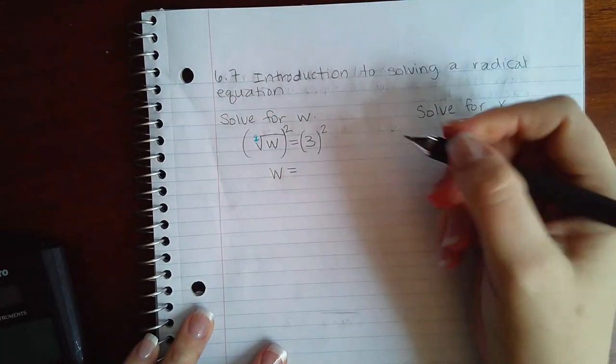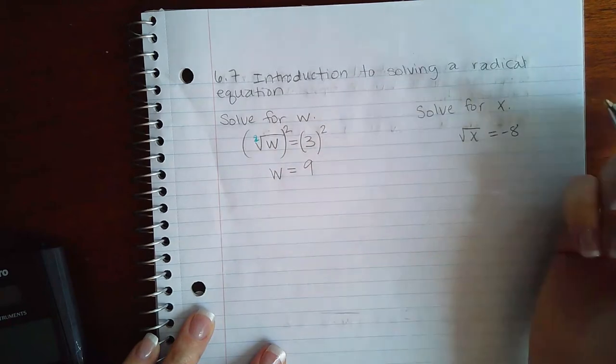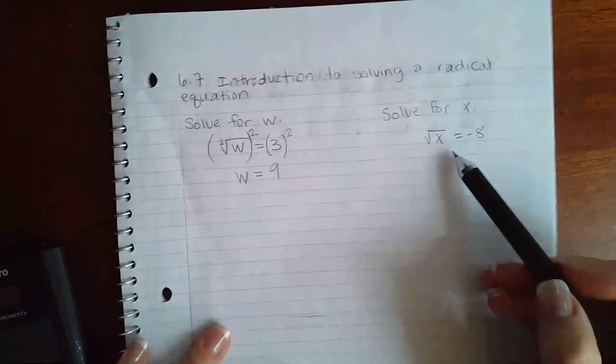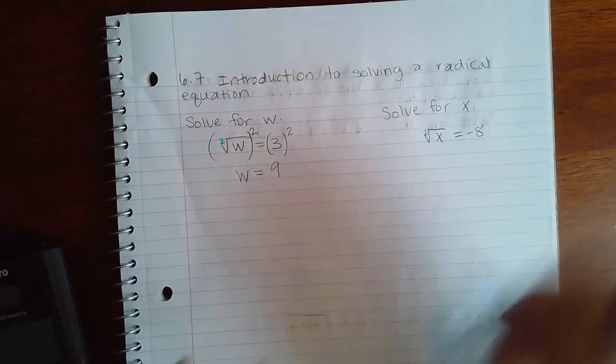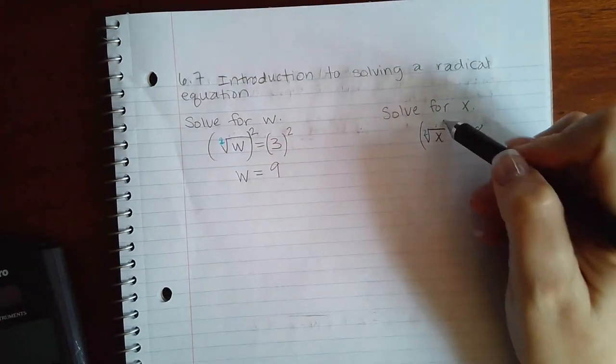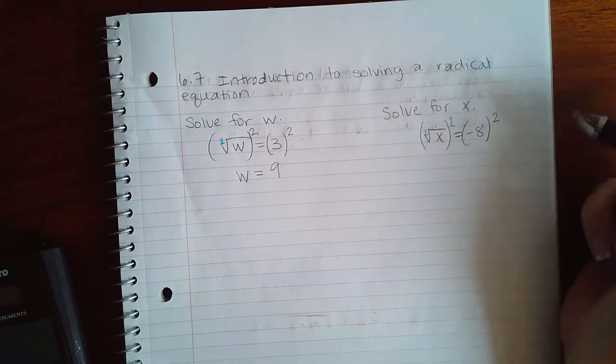Similarly, over here again there's no index written so it's a 2, so I'm going to apply that exact same power but do the same thing on both sides. Here those will undo each other, I will get X.